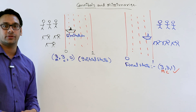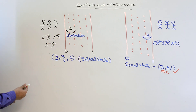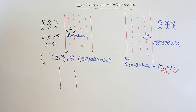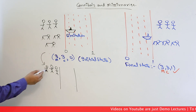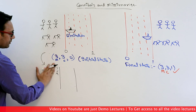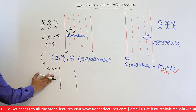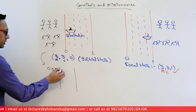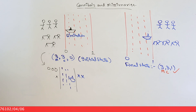Let us see the sequence of steps to solve the problem. I am representing missionaries by O and cannibals by X. In the first step, two cannibals drive the boat from location 0 to location 1. The boat will be at the far bank and the two cannibals will reach there.